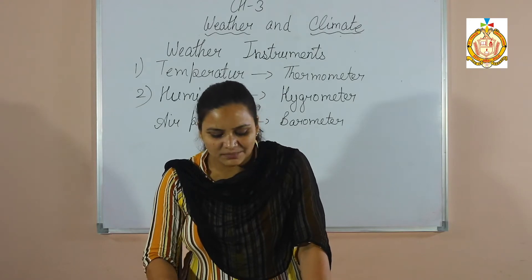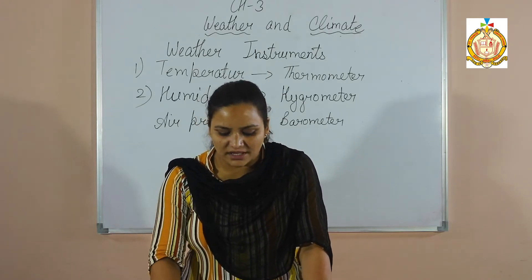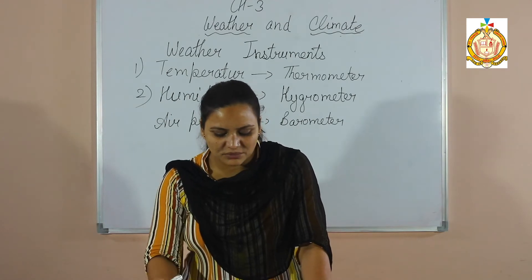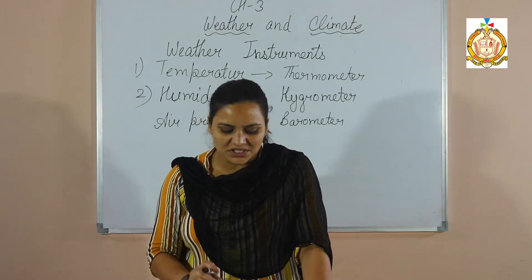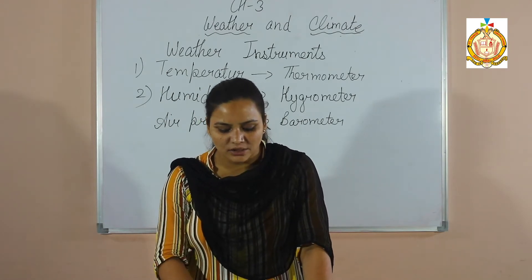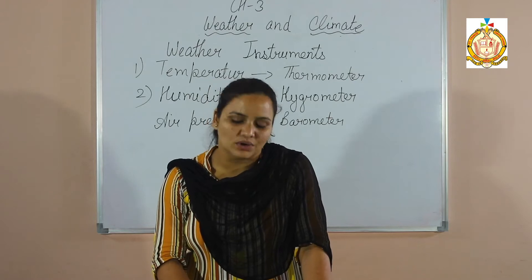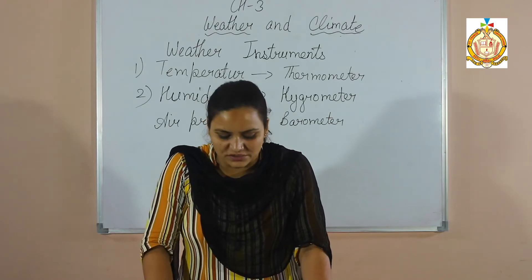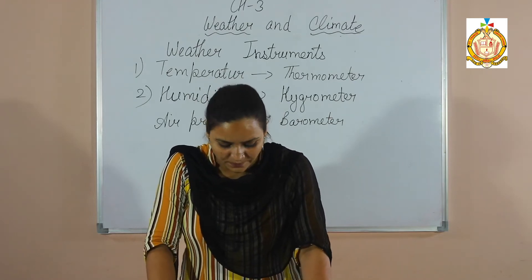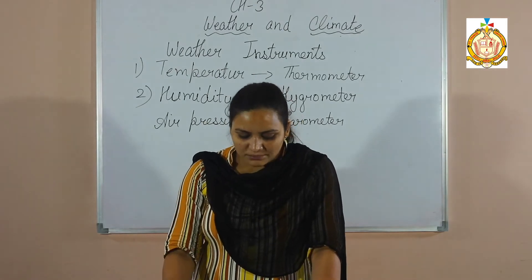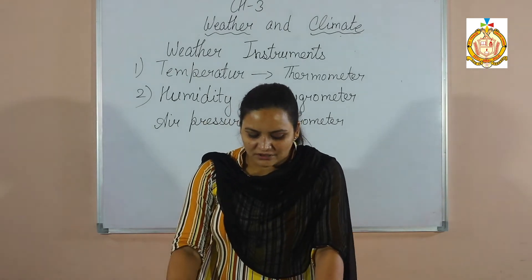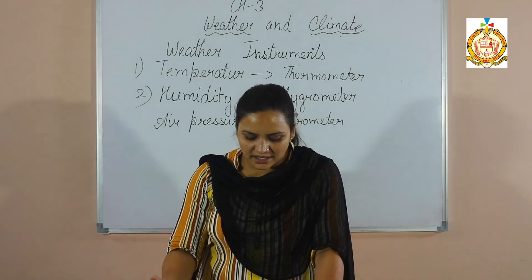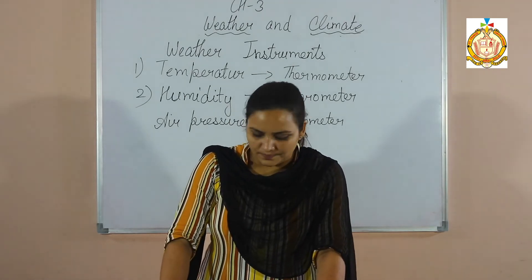The barometer provides the pressure of air which can be read on the scale marked on the glass tube. Atmospheric pressure is measured in millibars and 1013 millibars is considered to be the normal atmospheric pressure. When the mercury barometer was not easily accessible, the aneroid barometer was used.